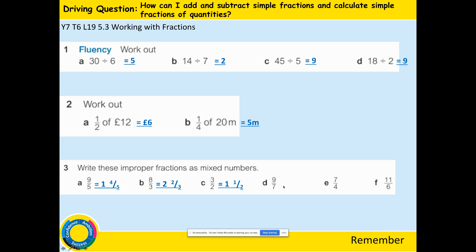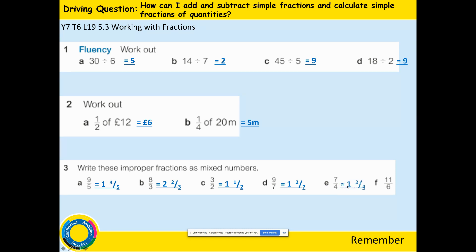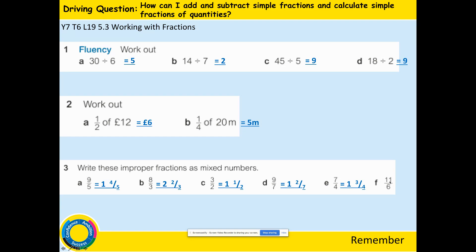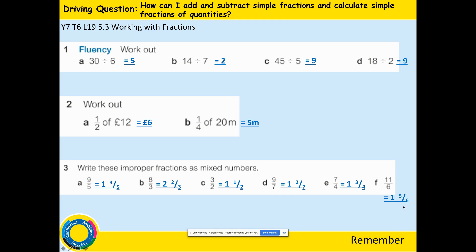7 into 9 is 1 remainder 2, so 1 and 2 sevenths. We divide by 7 so 7 stays on the bottom. 4 into 7 is 1 with a remainder of 3, so 1 and 3 quarters — 4 stays as your denominator. 6 into 11 is 1 with remainder 5, so 1 and 5 sixths — 6 stays as your denominator.